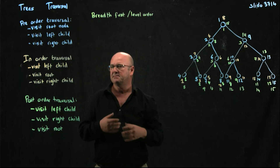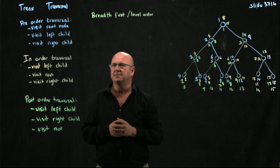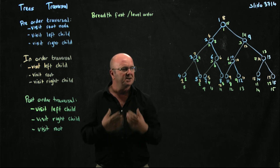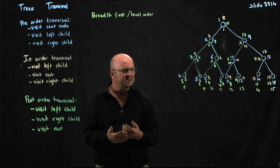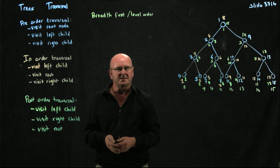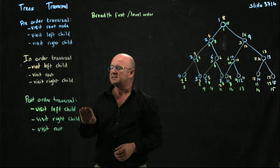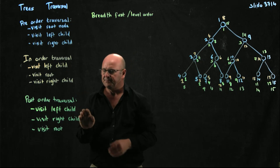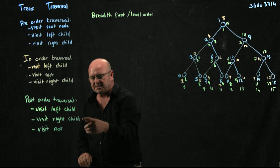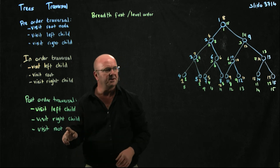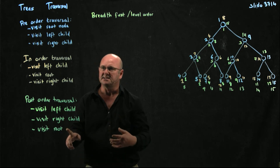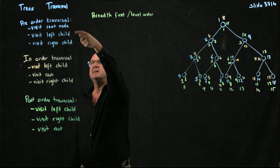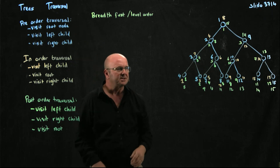Mostly we use one of the depth-first traversal types, and mostly when we talk about manipulating trees we're going to use recursive methods. That means we do something to the left child, then to the right child, and then to the node we're at — or we do something to the node we're at first, then go left and then right.